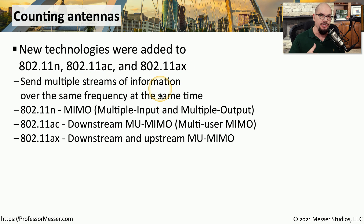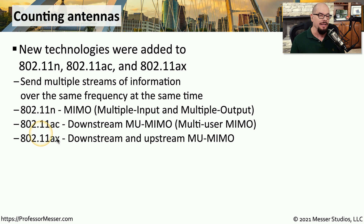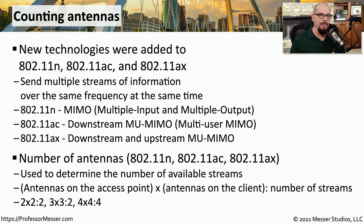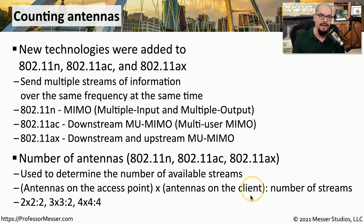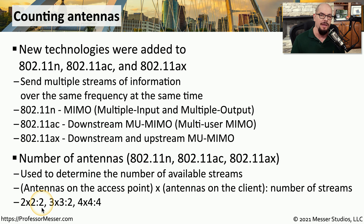Multi-user MIMO allows us to send multiple streams of information over the same frequency at the same time. In 802.11n, we support basic MIMO — multiple input, multiple output. In 802.11ac, we support a downstream version of multi-user MIMO. In 802.11ax, we support both downstream and upstream multi-user MIMO. To send and receive information simultaneously, we need the proper number of antennas and streams. A device might support 2x2:2 or 4x4:4, where the first number is the antennas on the access point, the second is antennas on the client, and the number after the colon is the total streams supported.